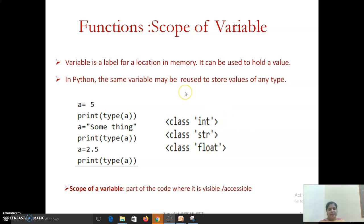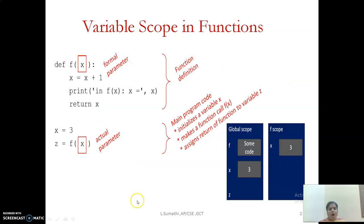This is the flexibility we enjoy with Python. Now what do you mean by scope of a variable? The part of code where the variable value is visible, or in other words it is accessible. You call it the scope of that particular variable. With this introduction, we will see how the variable scope plays an important role in your functions.